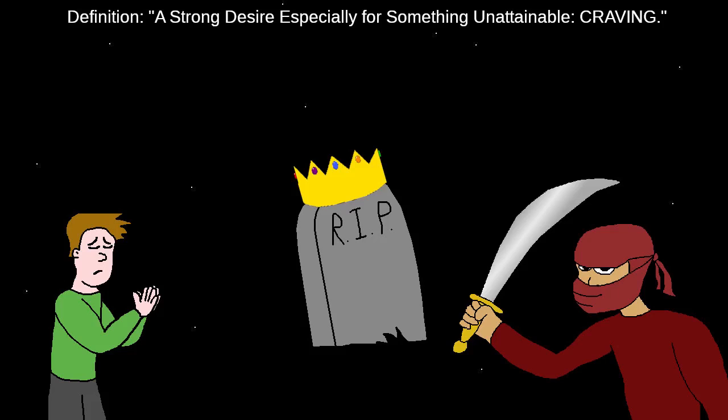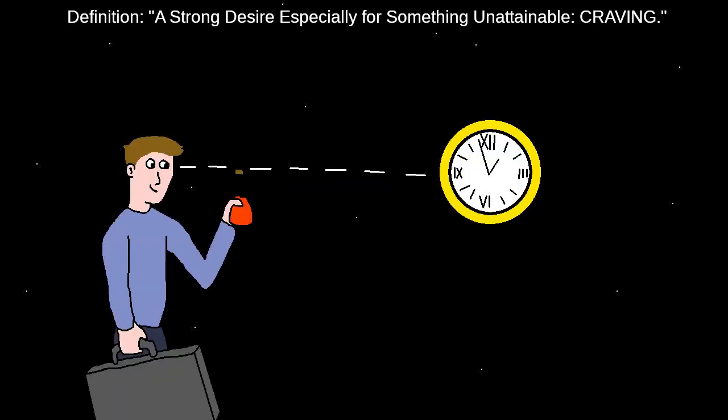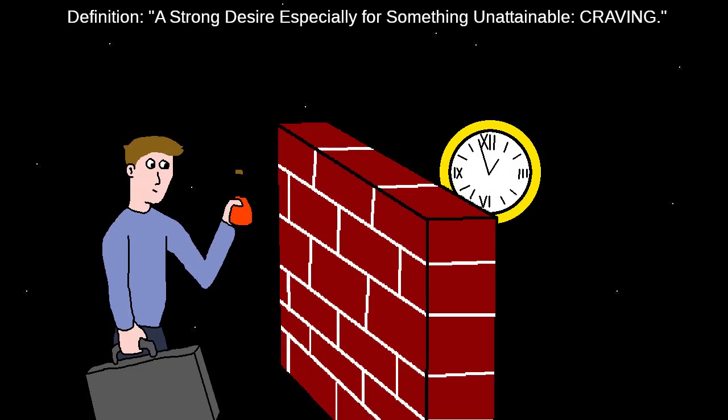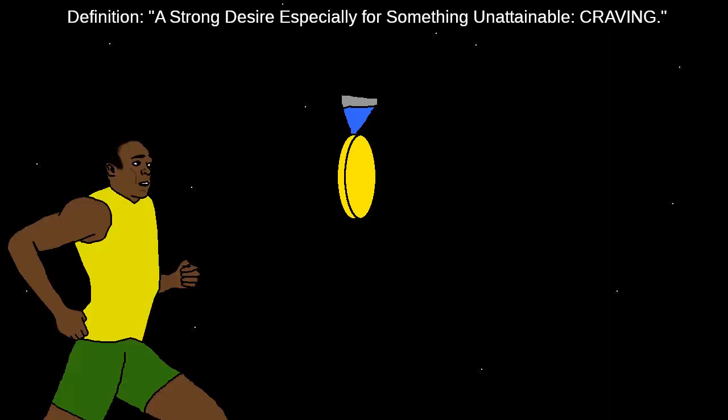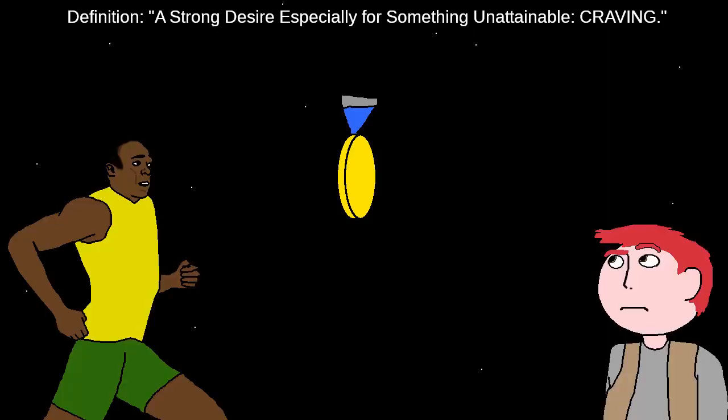Other times, a person longs for things they acquire on a regular basis, like their next day off from work, but just can't acquire at the moment. Still other times, the longing is for something like a gold medal in high jumping, which someone can definitely attain, but probably not you or me.